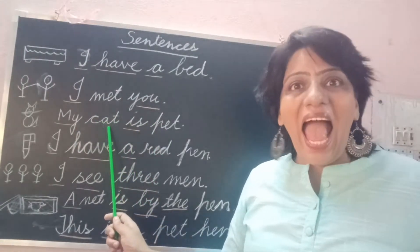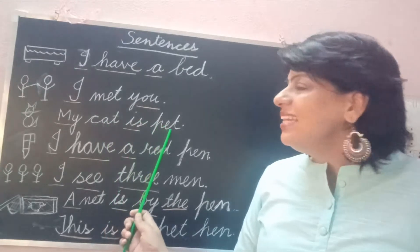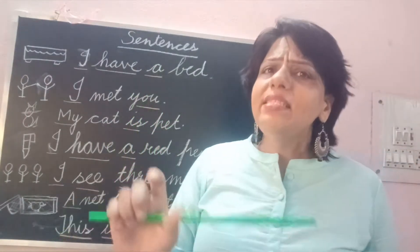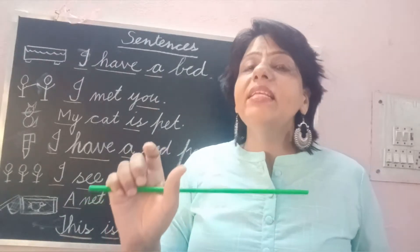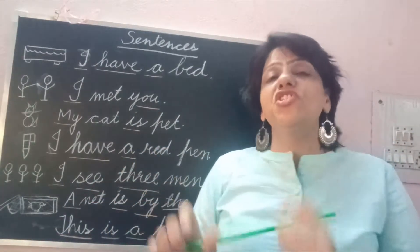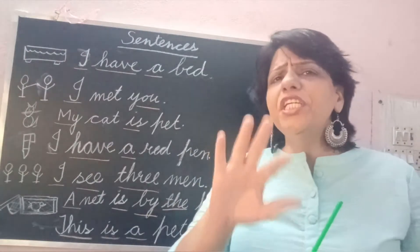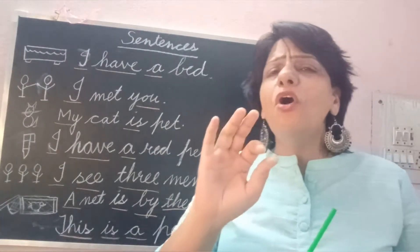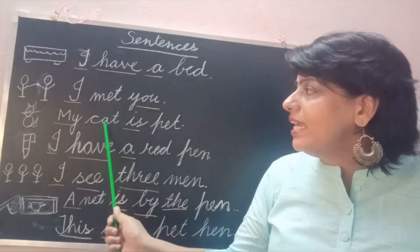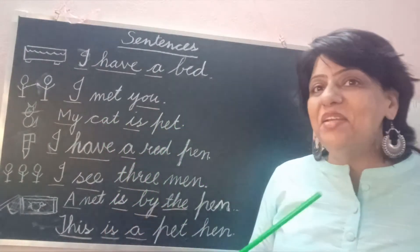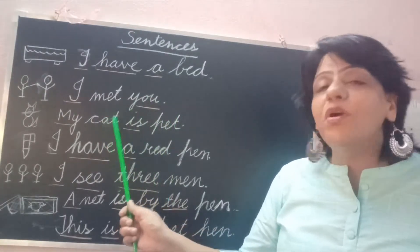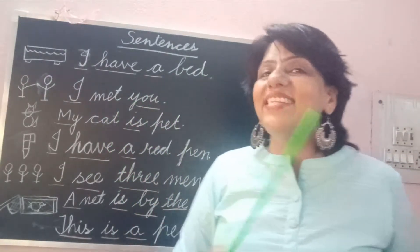A says A, E says E. We have to just compare the sounds to make the concept clear to the child. He or she should not get confused with the sound of letter A and letter E. That is why I have written both words together in one sentence.